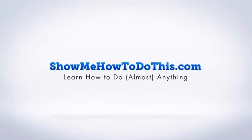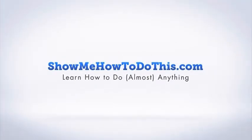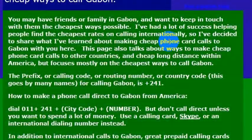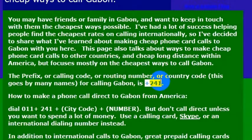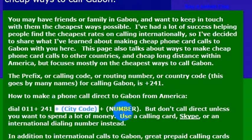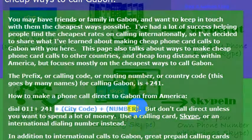If you were calling Gabon, you would want to know the international calling code for the country. The international calling code is 241. So if you were going to make an international phone call directly — just picking up a landline phone — you would dial 011, then 241, and then the city code and the number. And that's how you would call Gabon.